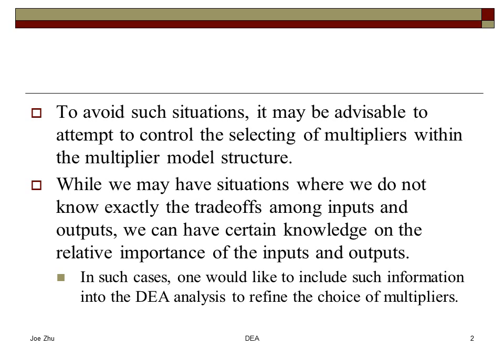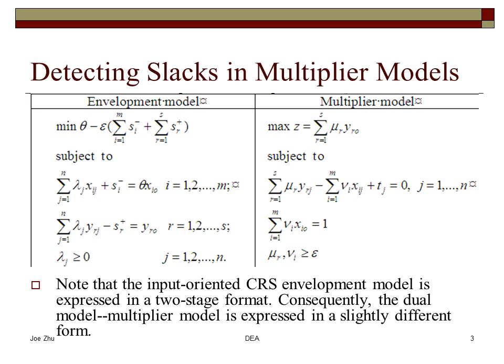So what we need to do is actually to control the weights or the multipliers in the multiplier model. Because if you recall in the multiplier model, the restriction on the weights are basically that the weights of the multiplier are non-zero. In a sense, in some cases, you can actually have zero weights for some of the multipliers.